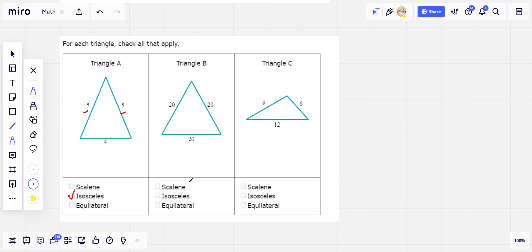Here in triangle B, we have 20, 20, 20. That's equilateral. It's all three. But remember, every equilateral is also isosceles because there are two sides the same length.